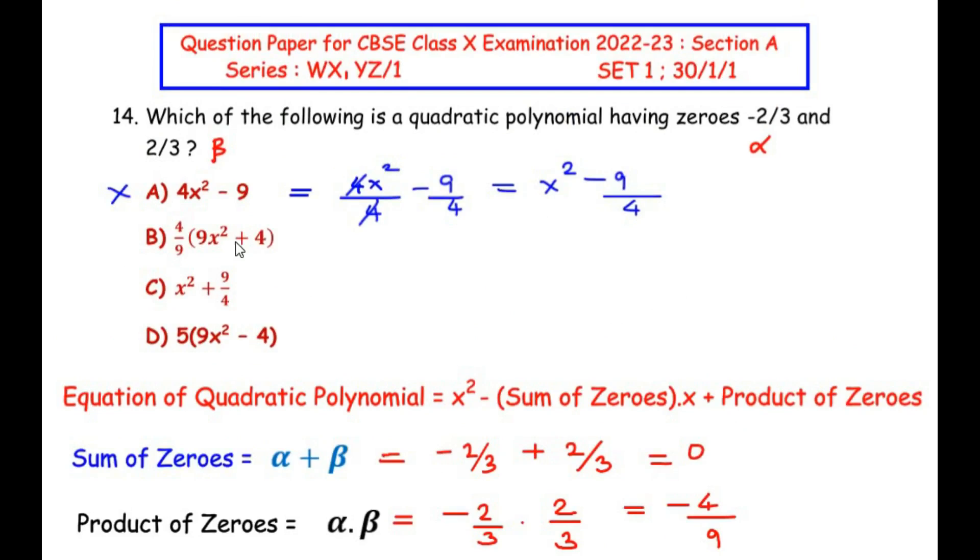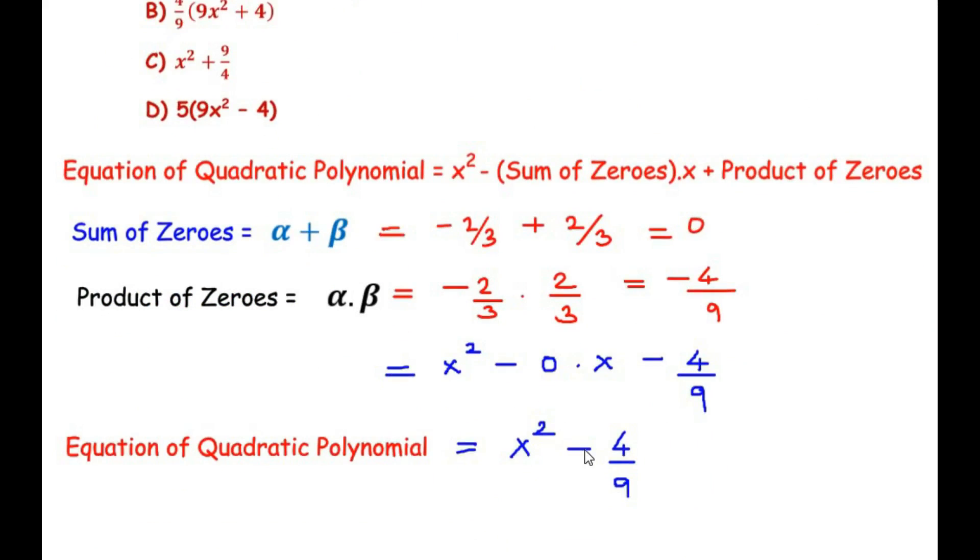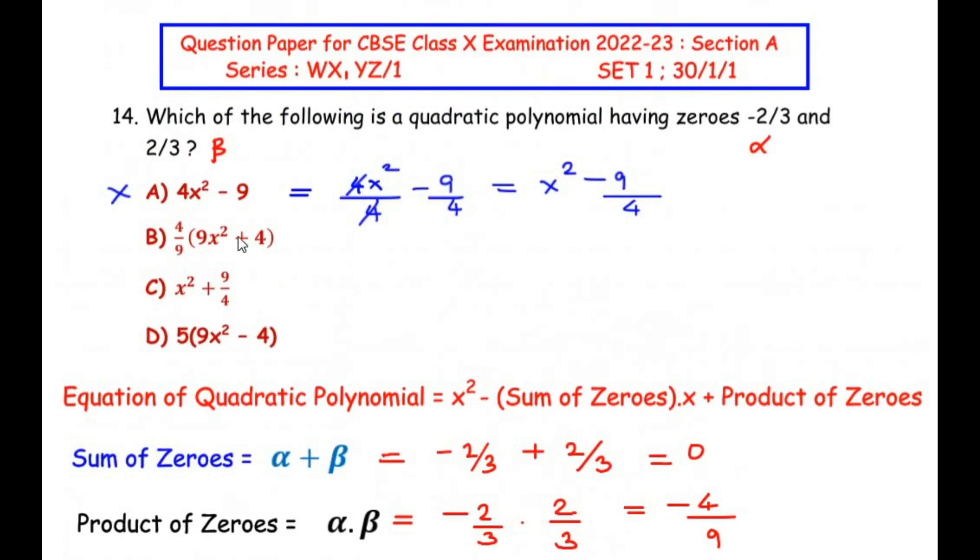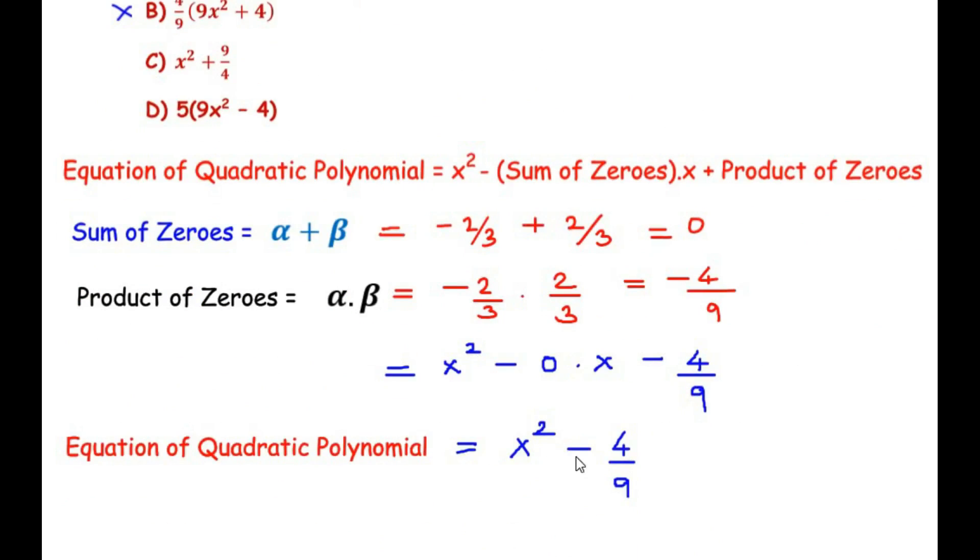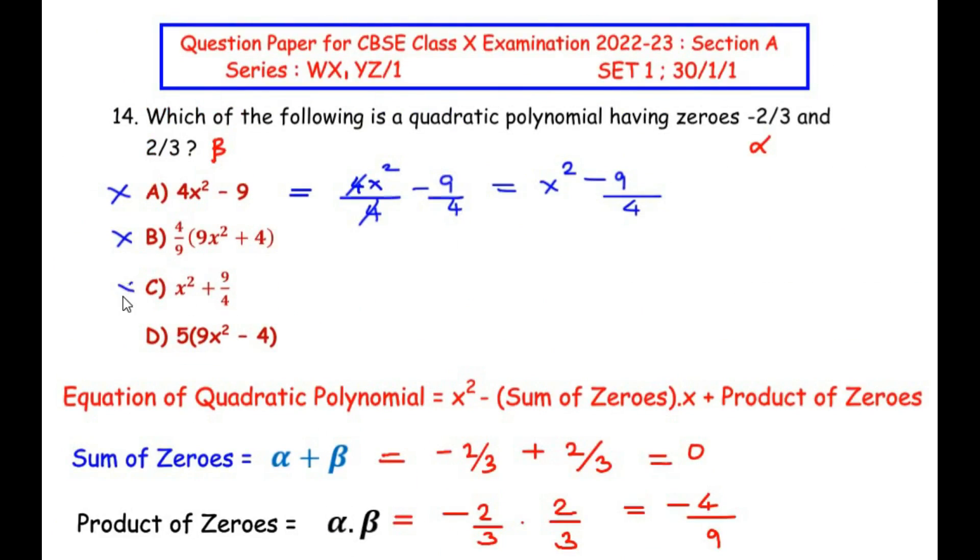Let us look at the next one. The second one clearly cannot be our answer because we are looking for a negative term in between and here there is a positive sign. So we can discard option B. Similarly in option C it is x² + 9/4 but our quadratic polynomial should be x² - 4/9. So we can directly discard option C. Now let us look at the last option.